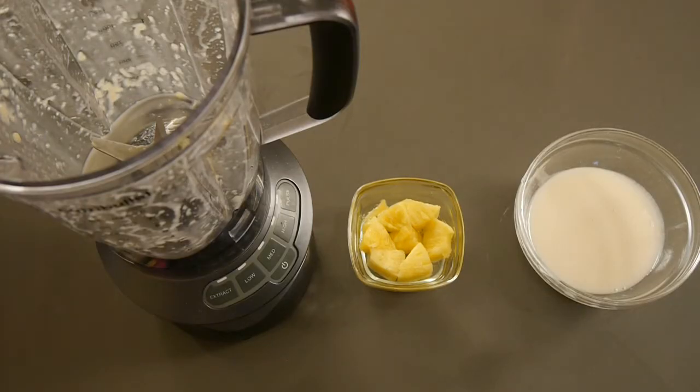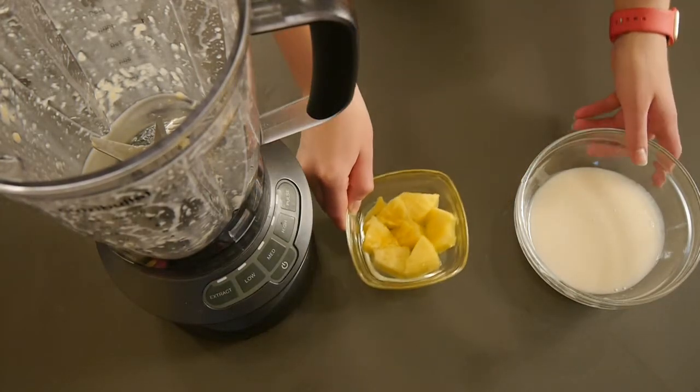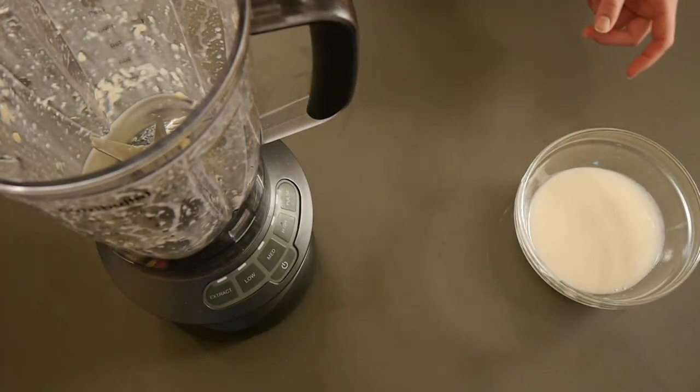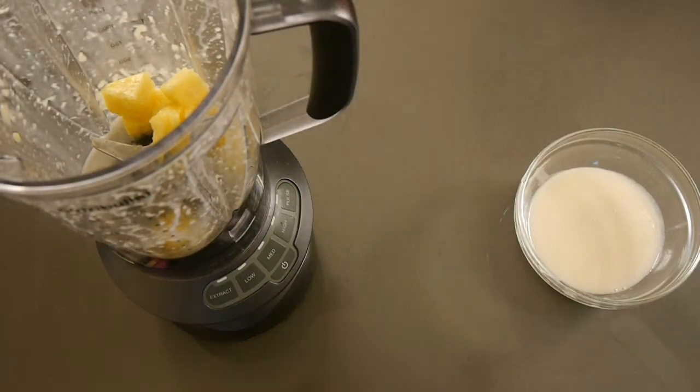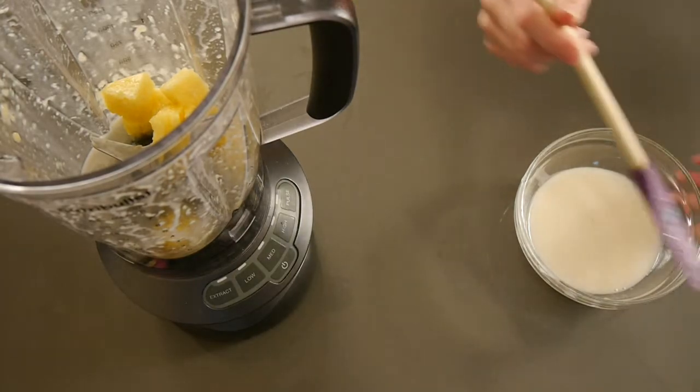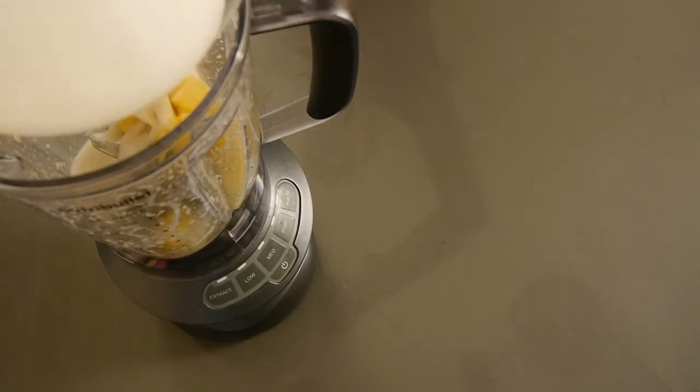Now with the pineapple that was soaked in the rum, I'm adding that and the other half of the coconut cream mixture to the blender. The recipe said to pour out the extra alcohol that wasn't absorbed by the pineapple, but I found that only some of it was absorbed and I didn't want it to go to waste.